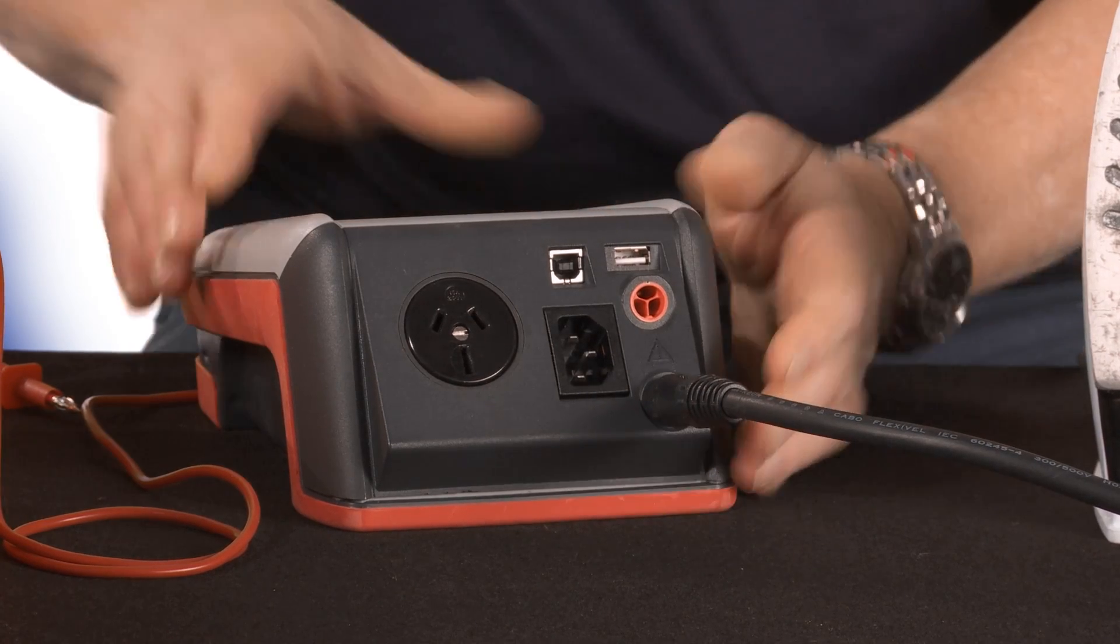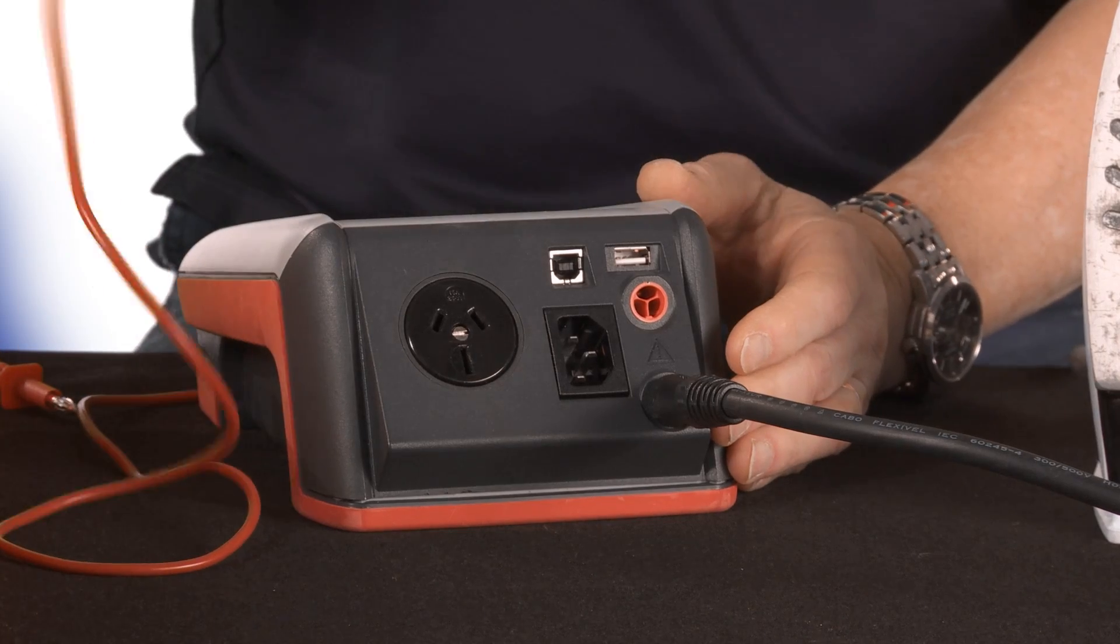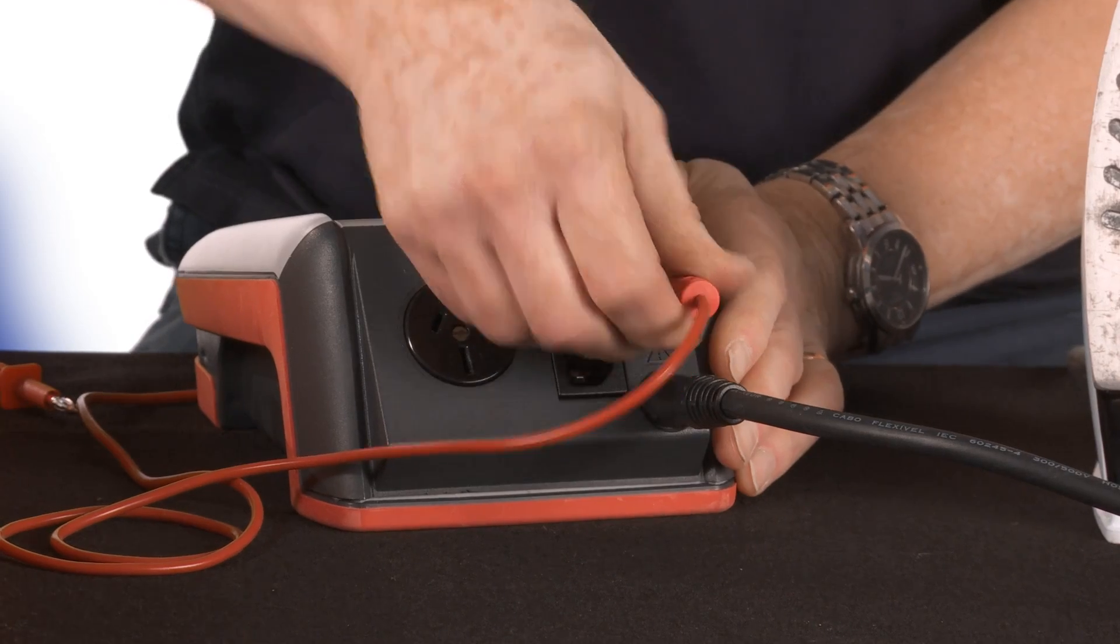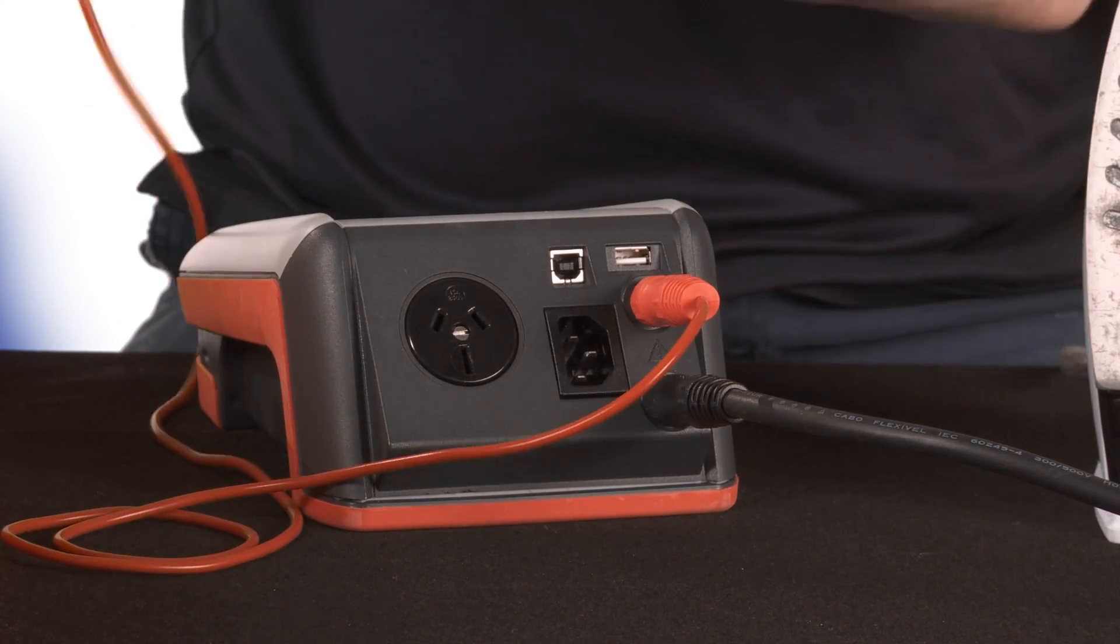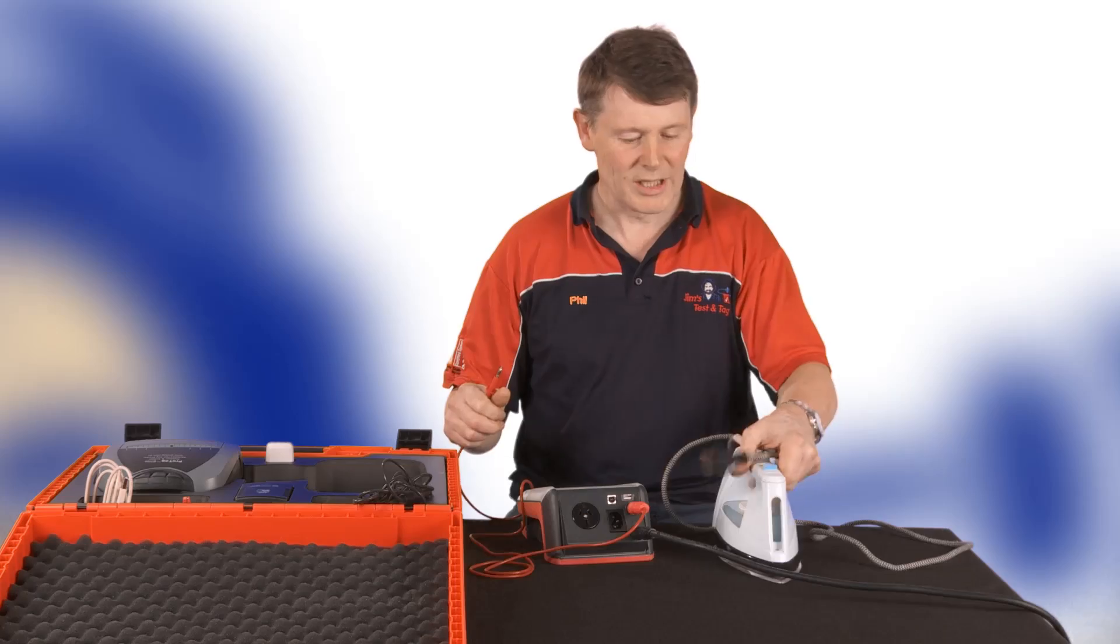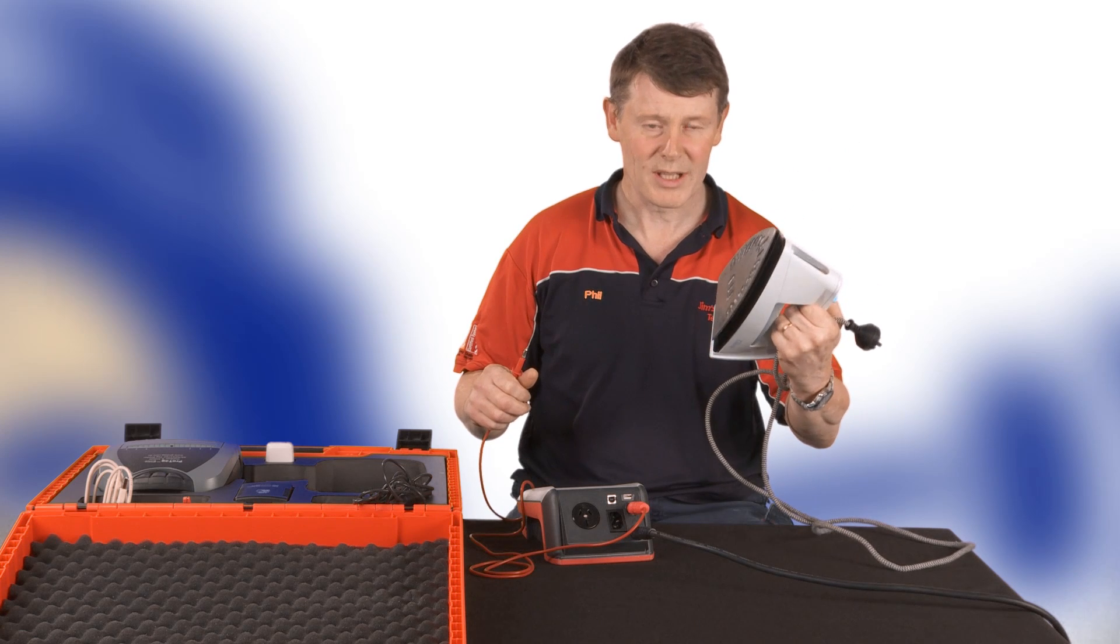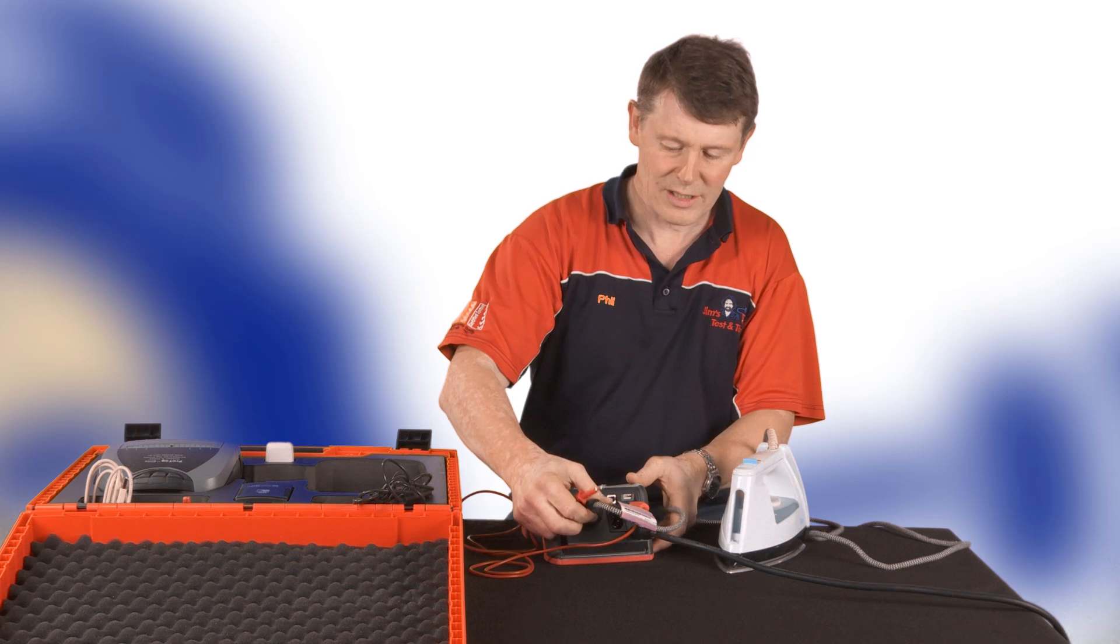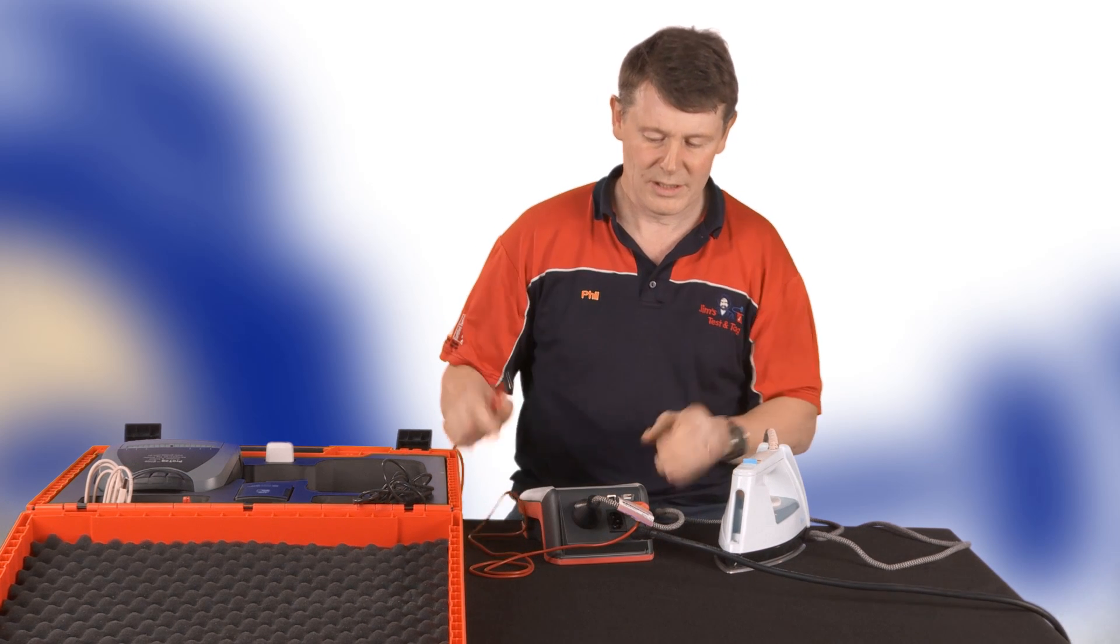I'll plug in the clamp, the probe lead, into the red socket. Notice that it's all colour-coded, so we can't get it too wrong. I'll now get my Class 1 device, in this case it's an iron, and plug it into the power socket.